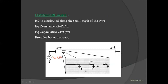The next one is the distributed RC model. In the distributed RC model, the RC is distributed along the line. We calculate an equivalent resistance using resistance per unit length: RT = RP × L. Equivalent capacitance CT = CP × L, where CP is the capacitance per unit length. In this model, we calculate resistance and capacitance using differential equations.